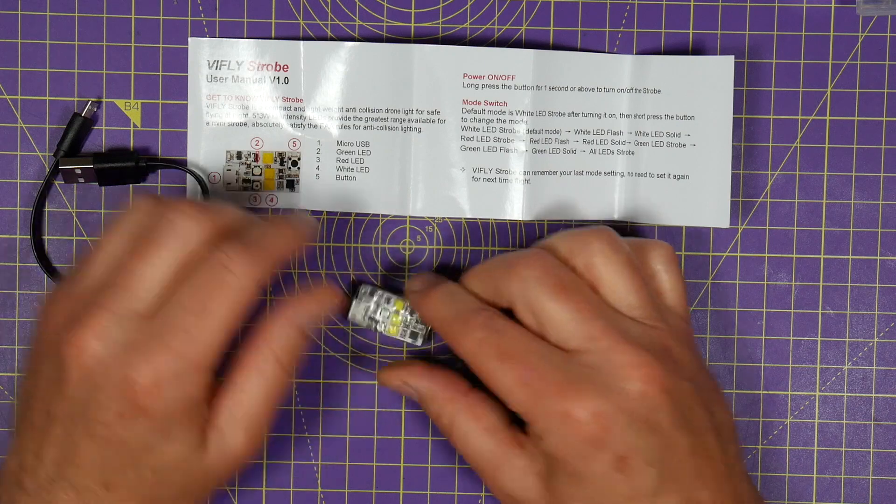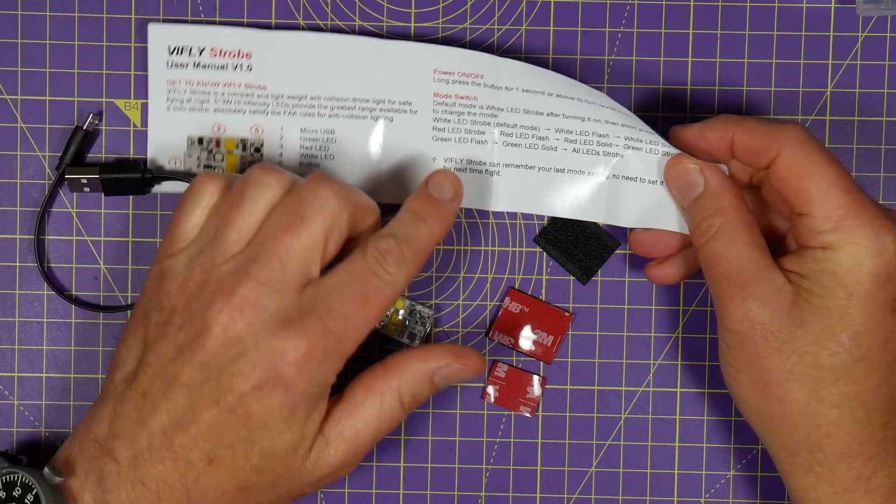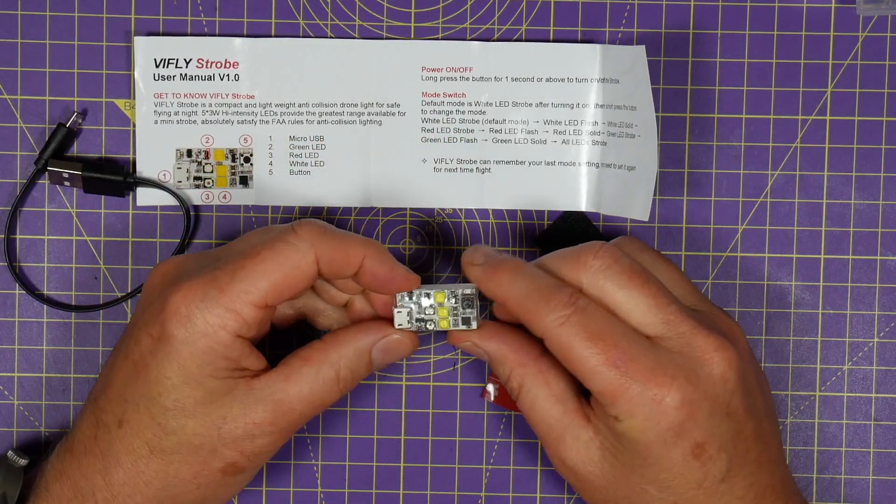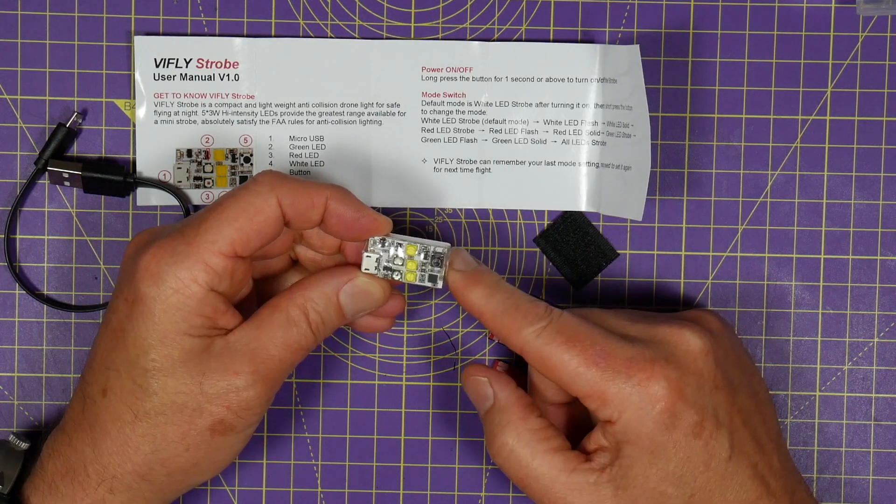So you get this little instruction manual with it which tells you all the modes which I can't read now. And this is priced at $15 and that's around £11 and that's fantastic value for money.